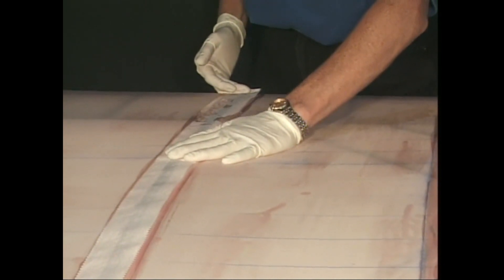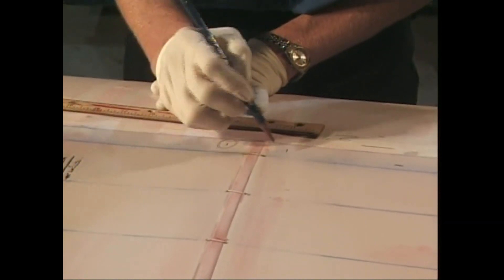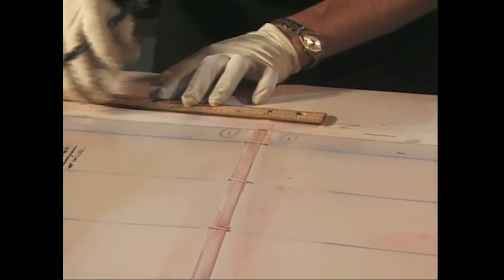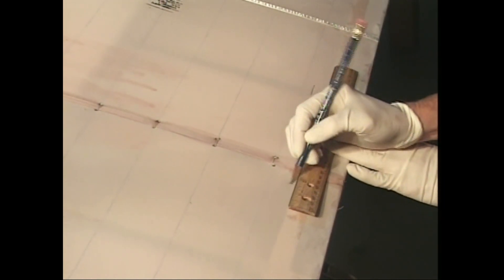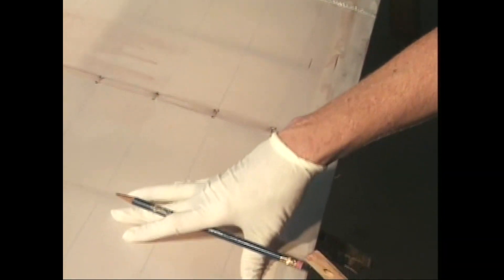Let's put a few of these lines on the tripacer wing to demonstrate. You'll need a number two pencil, a ruler, and the blue chalk line you used for marking the rib stitching. On all ribs, we will put two inch finishing tapes. At the leading and trailing edge, make pencil marks from the center of the rib out one inch in either direction.